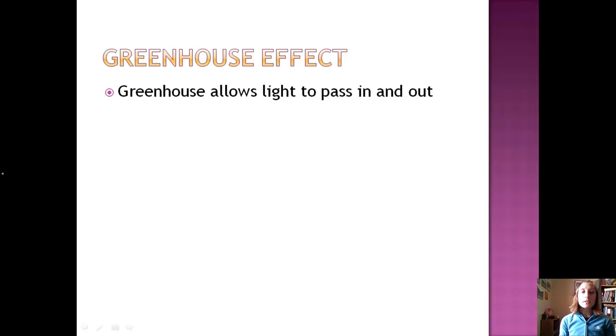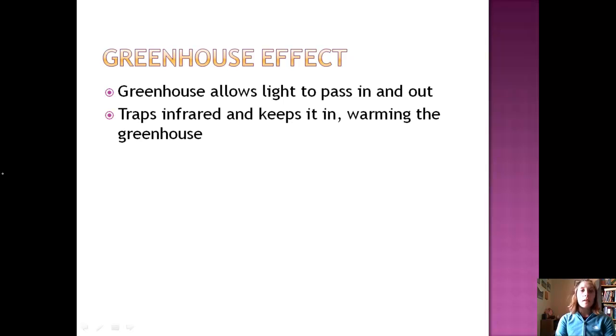Think about a greenhouse like the one in the Ag Department. Greenhouse allows light to pass in and out, right? Plants can live inside it. It's relatively light in there. But what it doesn't allow to pass in and out as much is infrared. It keeps it in, which makes the greenhouse really warm, even though it might be cold outside. Well, the atmosphere works the same way. It allows light to come in and out, but the heat from the sun gets trapped.